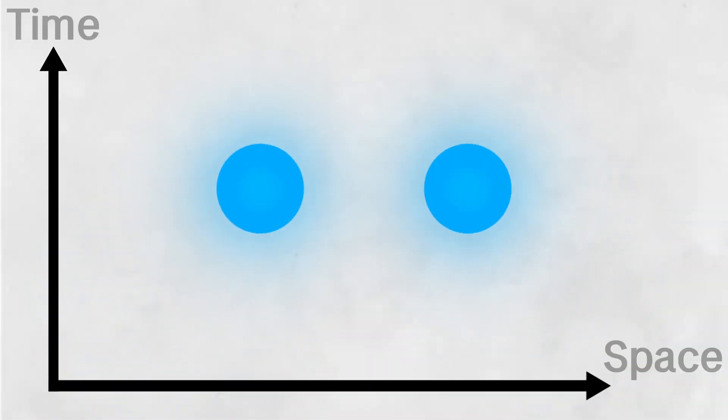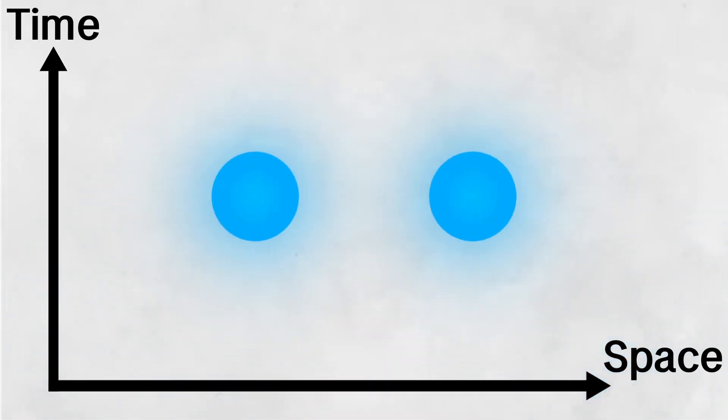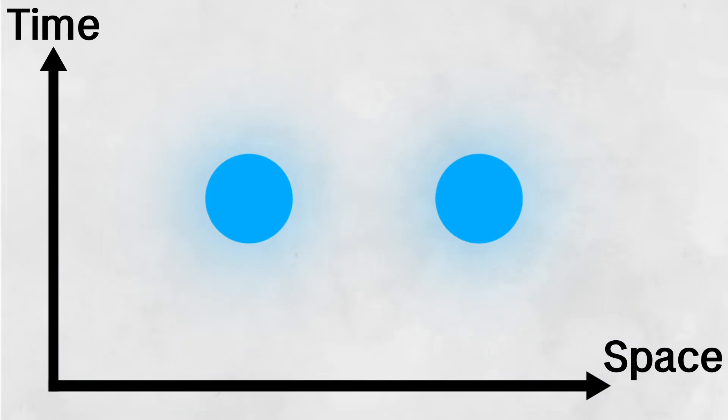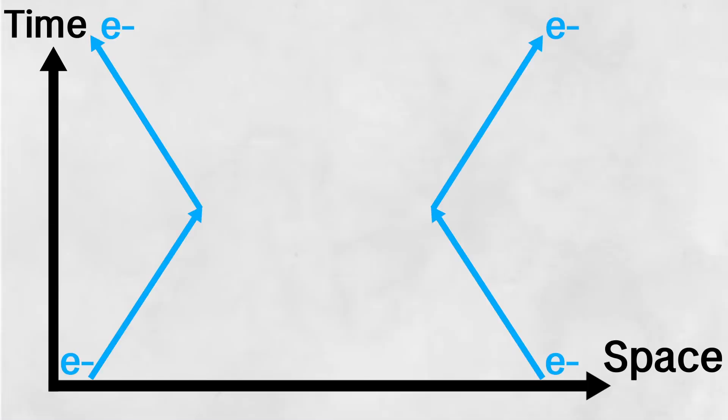Consider two electrons moving towards each other. As time moves forward, the electrons move closer, so we can graph that on the axes of space and time like this. But eventually, the electrons will repel. The electrostatic force that does this is carried by a photon.